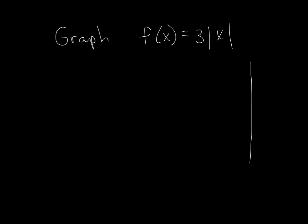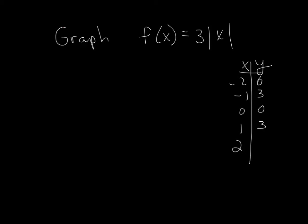As always, when in doubt make a table — that'll always get you where you need to go. Let's start with x values negative two, negative one, zero, one, two, and start plugging the numbers in. If you take negative two and plug it in, it becomes positive two, and positive two times three is positive six. Negative one gives positive one, times three is three. Zero times three is zero. Then positive one gives three, and two gives six.